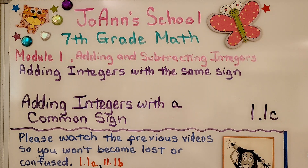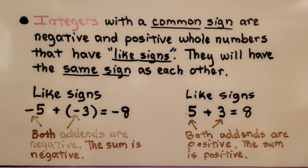Seventh grade math lesson 1.1c: adding integers with a common sign. Integers with a common sign are negative and positive whole numbers that have like signs — they will have the same sign as each other.